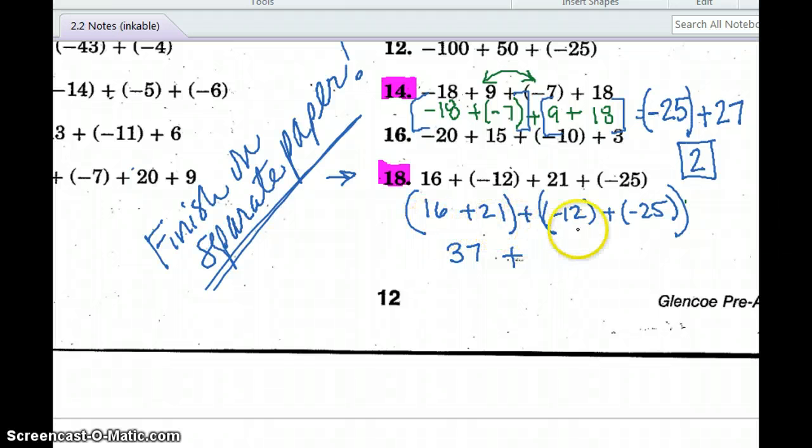Negative 12 and negative 25, so that's going to give me a negative 37. Now I'm going to subtract, oh, 37 plus a negative 37, that is additive inverse. Additive inverse says that equals zero. Don't be a zero. Please do your homework. Have a great day.